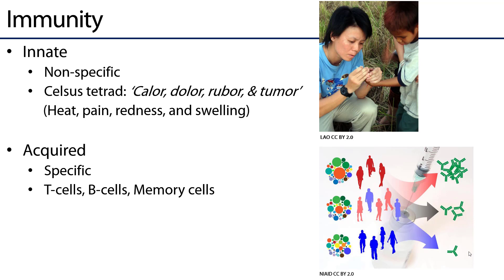The lymphatic system is also a major home and host to immune responses. When we talk about immunity, it's important to understand that there are two major types: innate immunity and acquired immunity. Innate immunity is with us from birth. It's nonspecific with respect to pathogen.